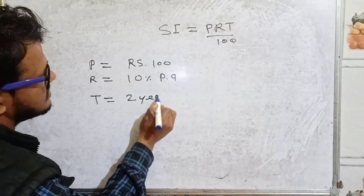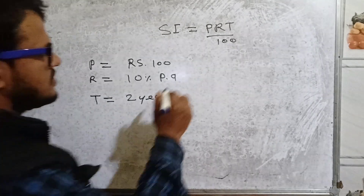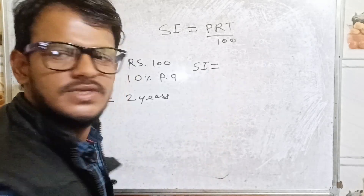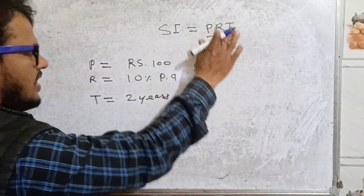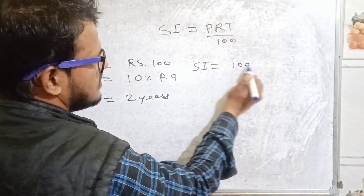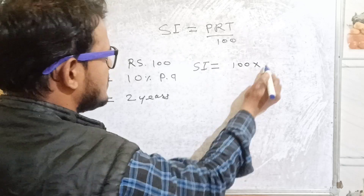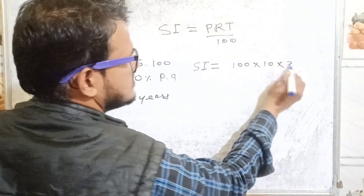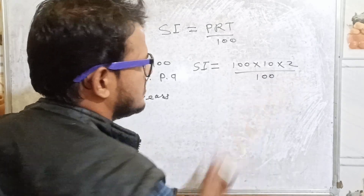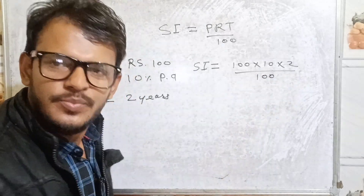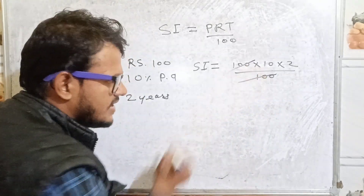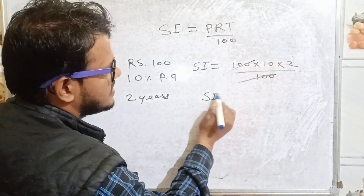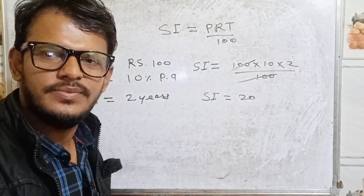Our target is to find the simple interest. Simple interest equals P × R × T divided by 100. Principal is 100, rate of interest is 10 percent, and time period is two years, divided by 100. The 100s cancel out, and 10 into 2 gives us 20. So the simple interest is equal to 20 rupees.